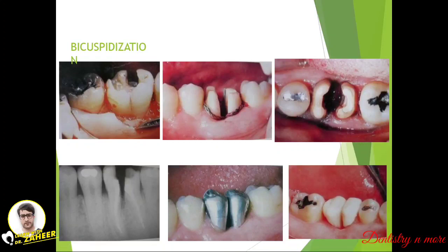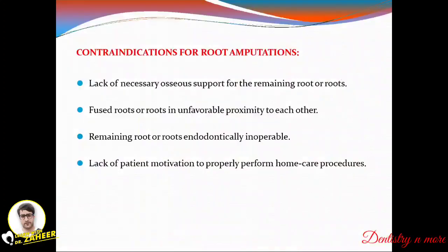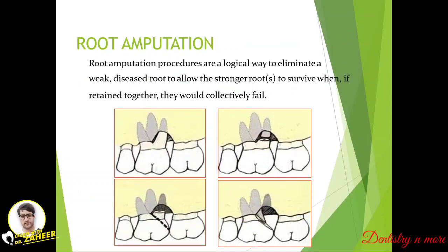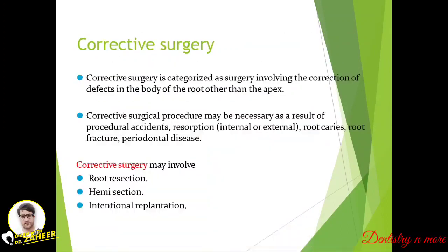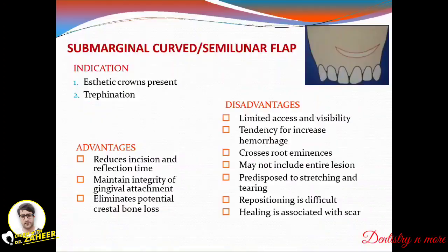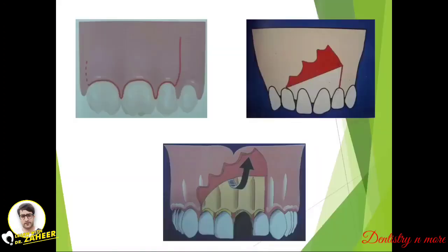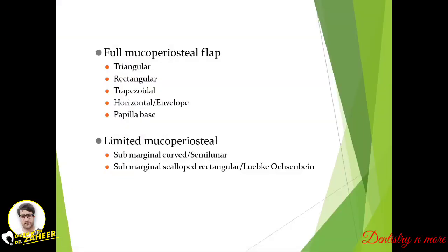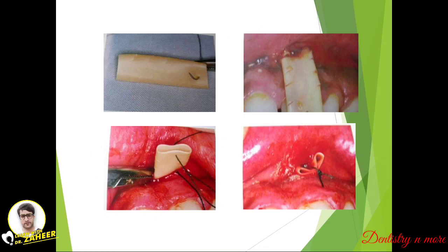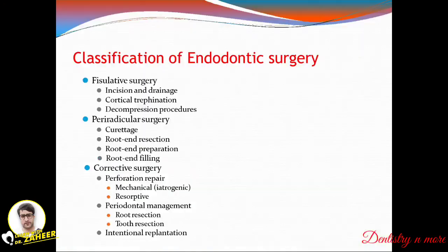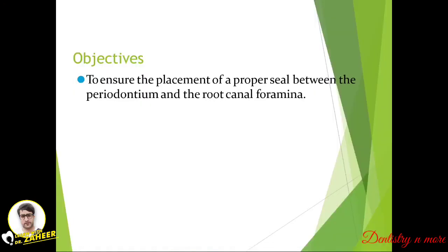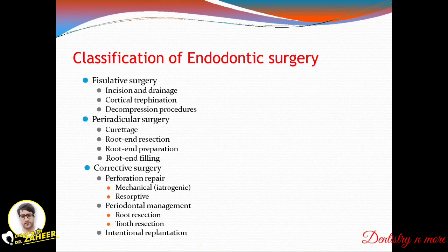That was all about corrective surgery — bicuspidization, hemisection, and root amputation are the most commonly asked questions, along with flap designs. The various types of mucoperiosteal flaps and limited mucoperiosteal flaps are very important. That covers the endodontic surgery session; I've included only the very important exam questions. I'll come up with a new topic in endodontics. Thank you.